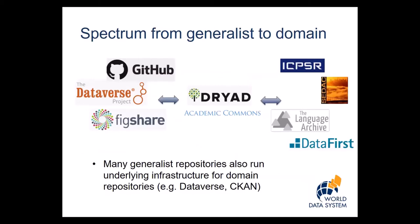Today, there's a spectrum from generalist to domain repositories, ranging from places like GitHub, Dataverse, and Figshare on the left-hand side, to middle-ground ones more like Dryad, that started in a more domain area but have branched out. We have our own Columbia University Academic Commons, which serves the Columbia University community, and I know many other universities have their own commons. On the right-hand side, of course, is the traditional WDS membership, and some of those may feel their edge has been eroded a little by generalist repositories.